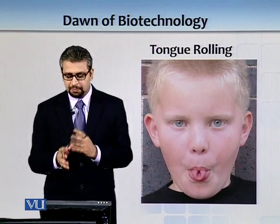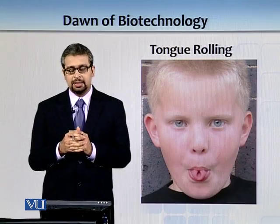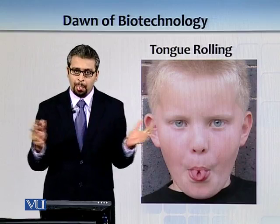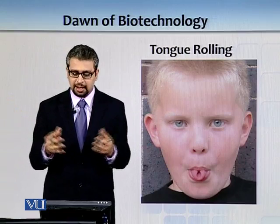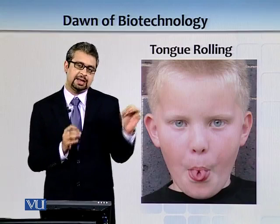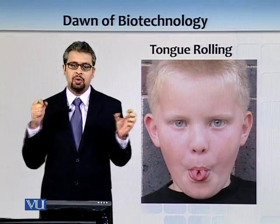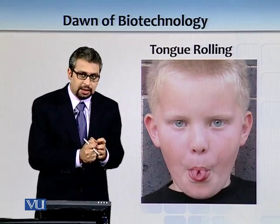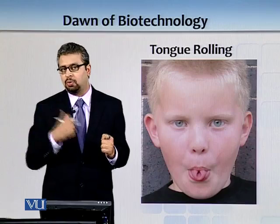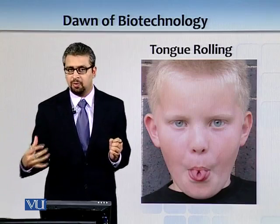For example, you can see a picture of a boy rolling his tongue — tongue rolling is pretty much a dominant gene. Some people can roll, some cannot. But there are also instances where people who couldn't roll their tongue ultimately learned to, so there can be some environmental factors involved as well.